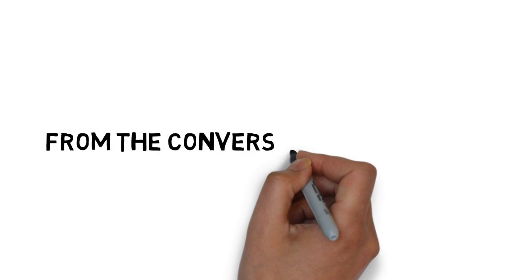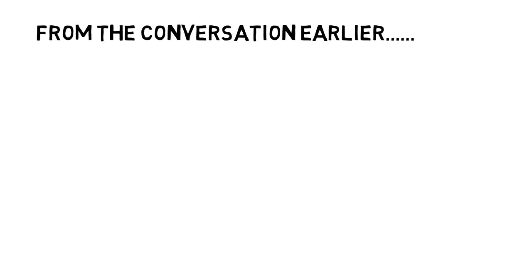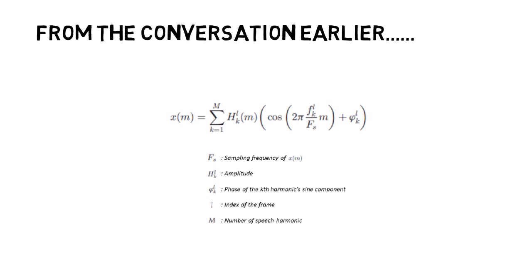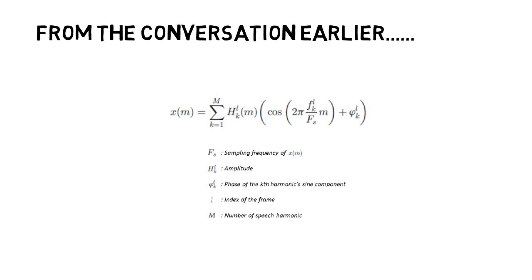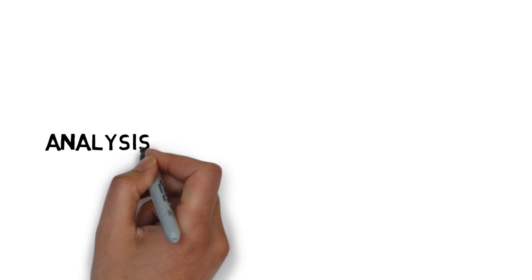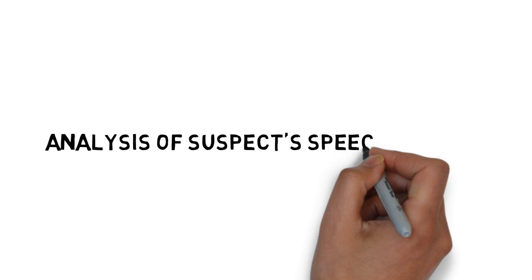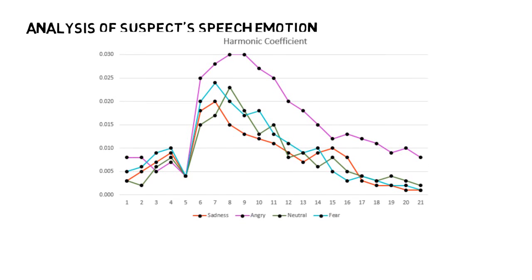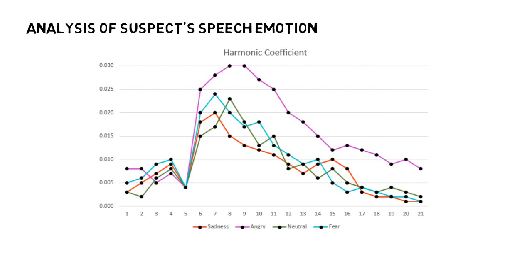From the interrogation conversation earlier, we can actually make use of this formula to represent a combination of the Fourier-Pyramidal model used to divide speech signals into frames. We can then make use of this formula to come up with our analysis of the suspect's speech emotions. By making use of the harmonic amplitude and phase features, it is observed that amplitudes vary with different classes of emotions. The harmonic part of the model is a Fourier series representation of a speech signal's periodic components. When a non-periodic component is sampled, its Fourier transform becomes a periodic and continuous function of frequency.